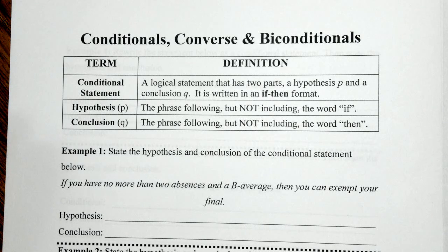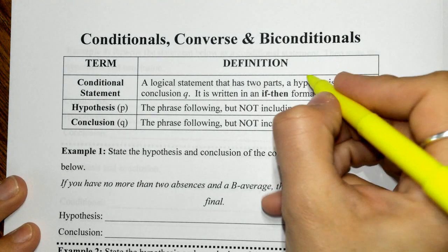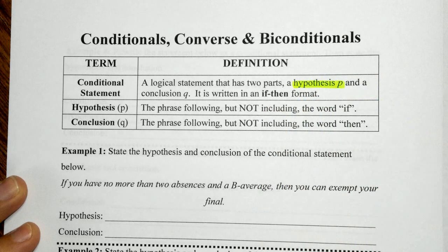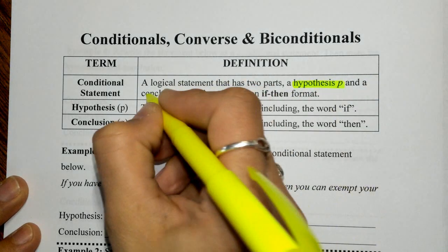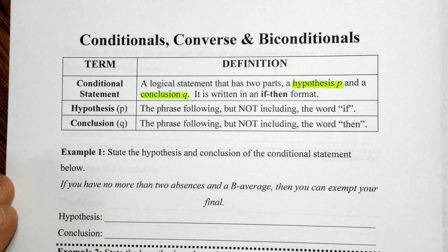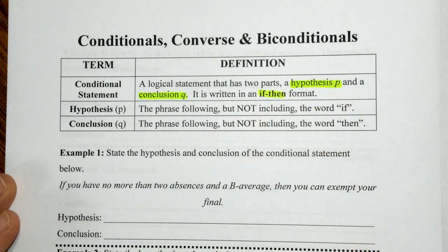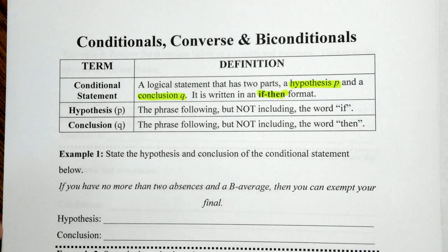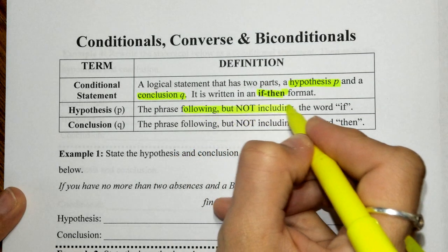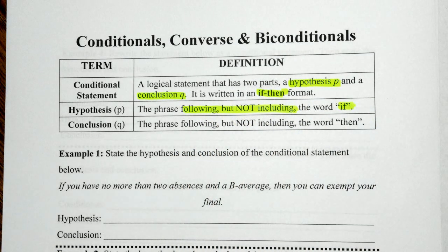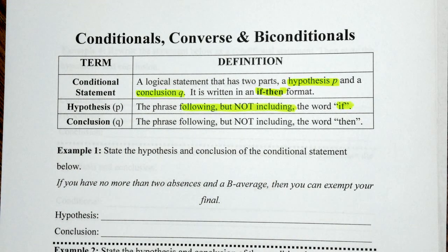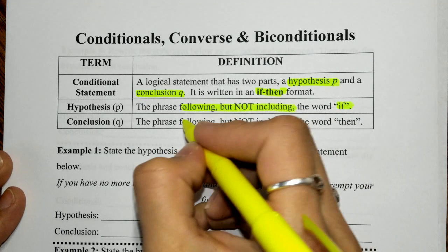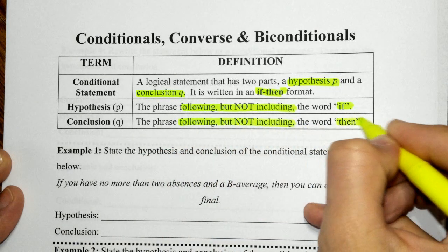The conditional statement is a logical statement that has two parts. It's going to have a hypothesis — we use the italicized P for this — and a conclusion, which is Q. We write this in if-then format. The hypothesis P is the phrase following but not including the word 'if.' Our Q, the conclusion, is the phrase following but not including the word 'then.'